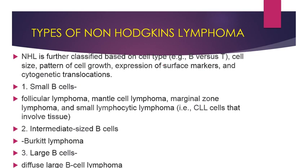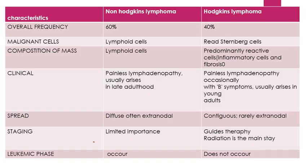Non-Hodgkin's Lymphoma is divided based on cell type, cell size, pattern of growth, expression of surface markers, and cytogenetic translocation. The small B cell types include follicular lymphoma, mantle cell lymphoma, marginal zone lymphoma, and small lymphocytic lymphoma. Intermediate size B cells include Burkitt lymphoma, which is most importantly associated with Epstein-Barr virus. The large B cell type includes diffuse large B cell lymphoma.